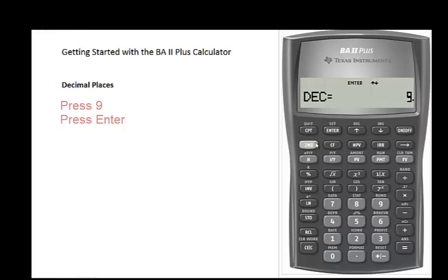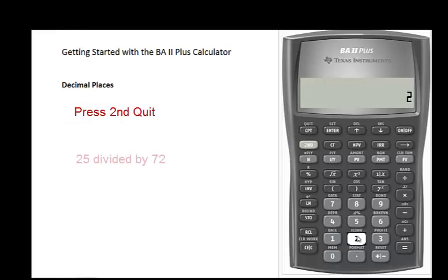To get out of this mode to calculator mode, press 2nd Quit. Now, when you do any calculation, 25 divided by 72 for example, you can see that the calculator shows all the number of decimal places in the results.